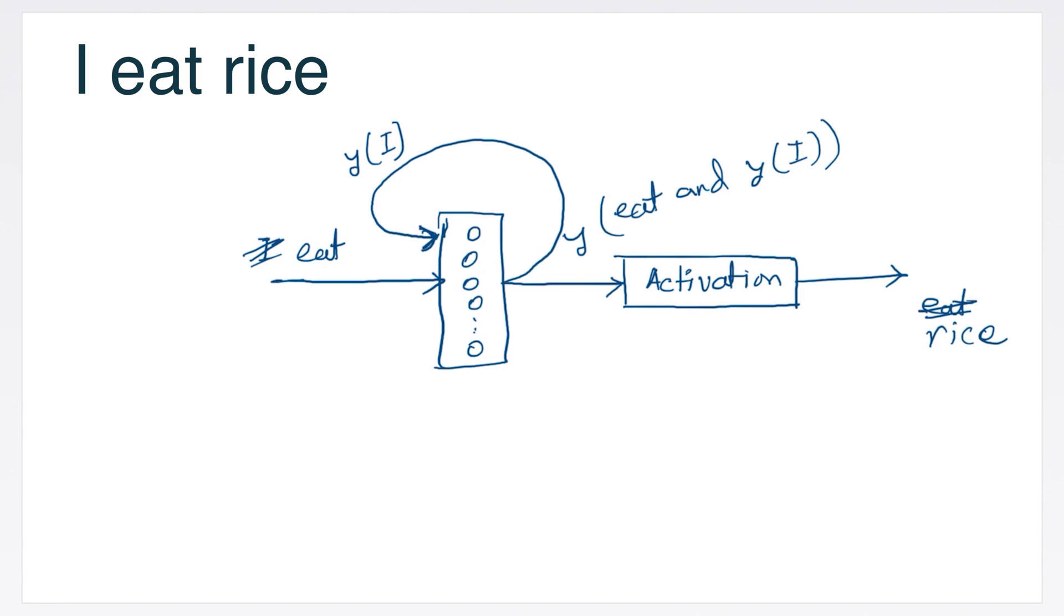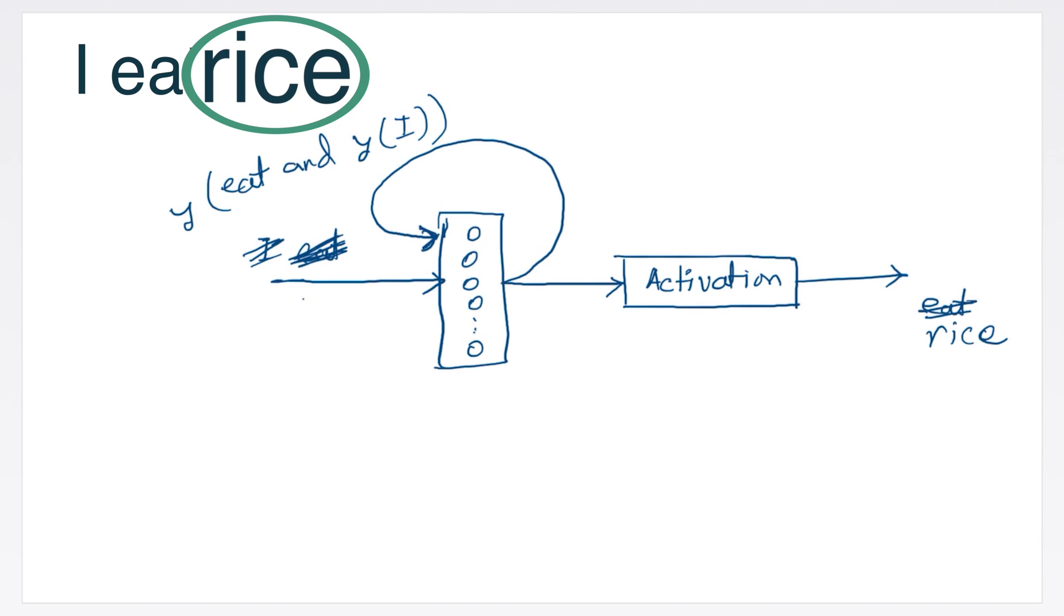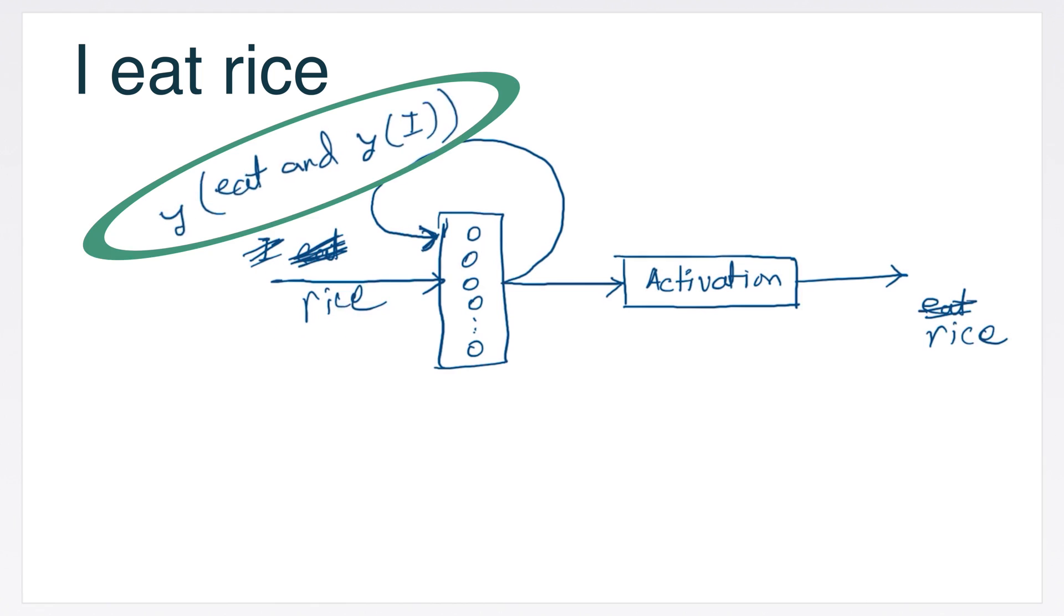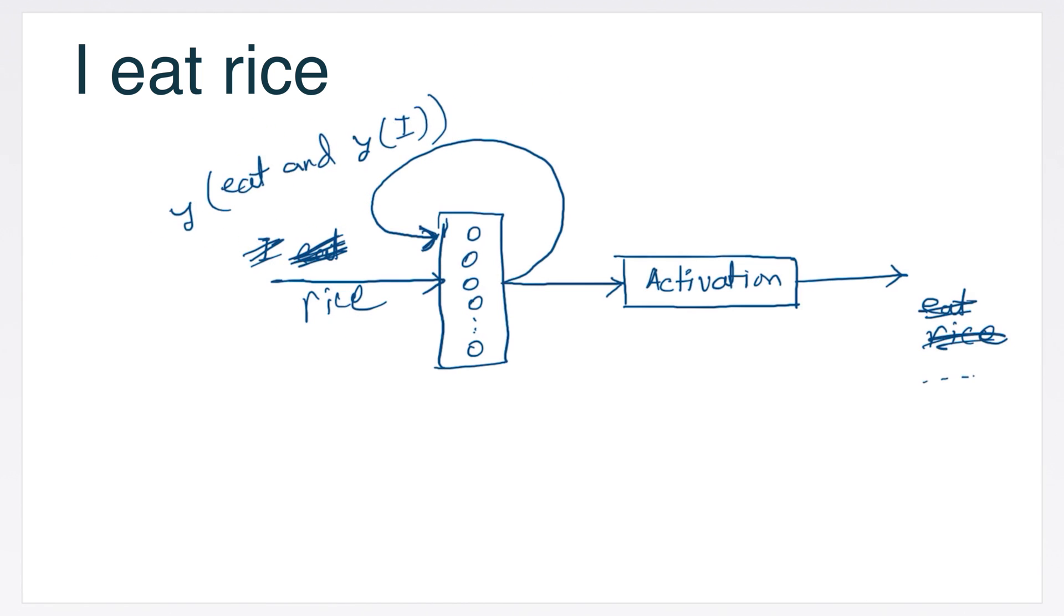as the word I's hidden state was fed with the word eat. That means so far, the latest hidden state is keeping information about I eat. The next word is rice. Rice goes in with the latest hidden state which contains information about I eat.